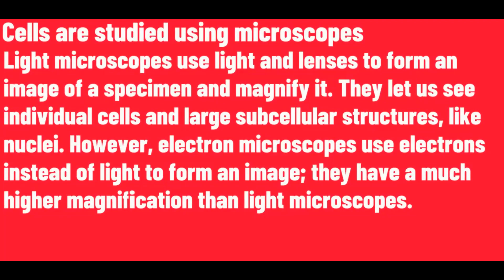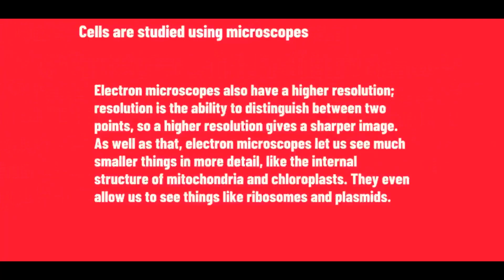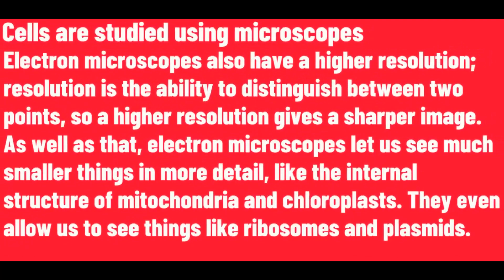However, electron microscopes use electrons instead of light to form an image. Electron microscopes also have a higher resolution. Resolution is the ability to distinguish between two points, so a higher resolution gives a sharper image. As well as that, electron microscopes let us see much smaller things in more detail, like the internal structure of mitochondria and chloroplasts. They even allow us to see things like ribosomes and plasmids.